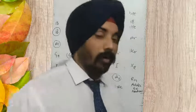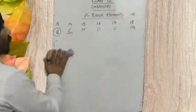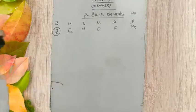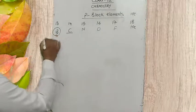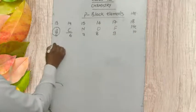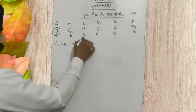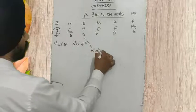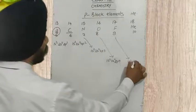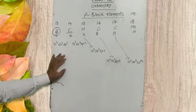Now we have to talk about the first element of each group of the P block elements. If we see the electronic configuration of the first element of each group, it is different from the other elements. For boron (Z=5): 1s², 2s², 2p¹; carbon (Z=6): 1s², 2s², 2p²; nitrogen (Z=7): 1s², 2s², 2p³; oxygen (Z=8): 1s², 2s², 2p⁴; fluorine (Z=9): 1s², 2s², 2p⁵. The last electron enters the p sub-shell.